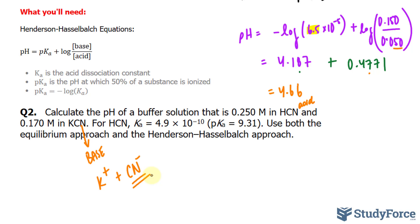Continuing on with the question, for HCN, the acid dissociation constant is 4.9 times 10 to the power of negative 10, and they were kind enough to give us the pKa as 9.31. So you can use this in the equation instead of using negative log Ka.